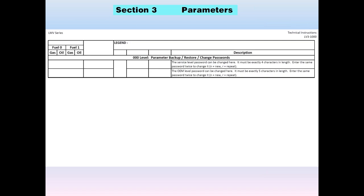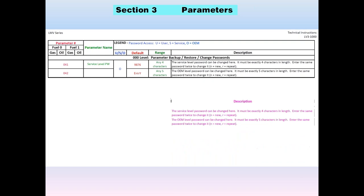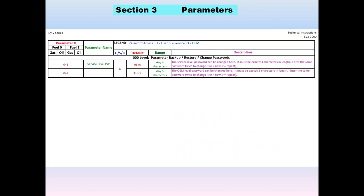The LMV3 starts with an extensive parameter listing chart. It shows the parameter number — for example, 41 and 42 are the passwords — the parameter name, and a column for access level: user, service, or OEM. To change any passwords, you must log in at the OEM level. Default values are shown: service level is 9876, OEM is 'entry'. The range is also shown — the service password is always four characters, OEM is always five. Finally, a description tells you how to enter a new password and what other information applies.